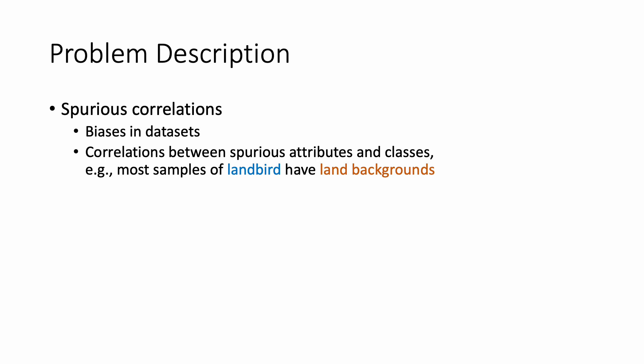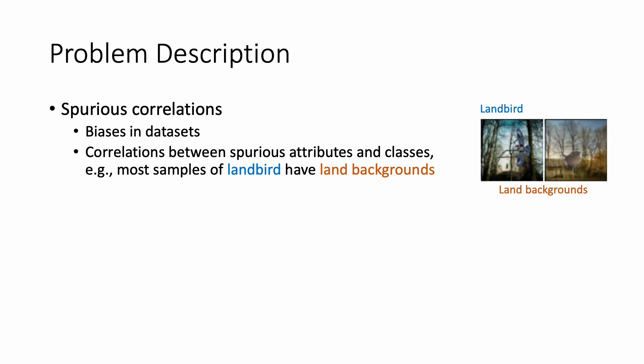Spurious correlations are biases in real-world datasets. There are brittle associations between spurious attributes and classes. For example, most samples of land birds have land backgrounds. Here, the land bird class and the land background form a spurious correlation.